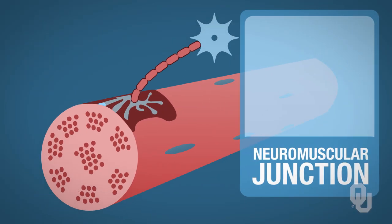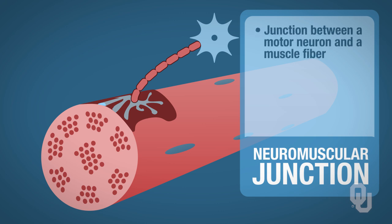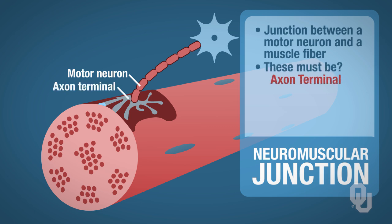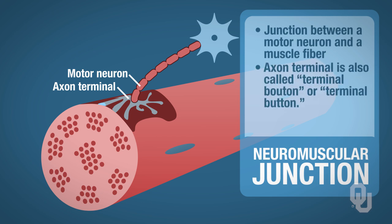Here we have a neuromuscular junction — a junction between two structures: a motor neuron and a muscle fiber. These structures at the end of the motor neuron are axon terminals, but in the context of muscle and neuromuscular junctions they are also called terminal boutons or terminal buttons. Different names, but same structure and same function.